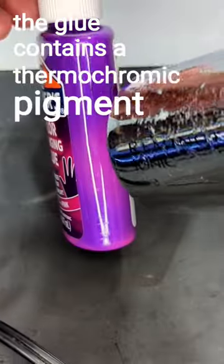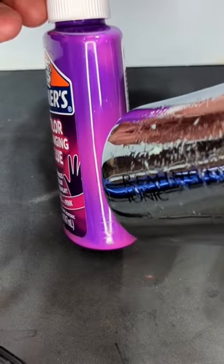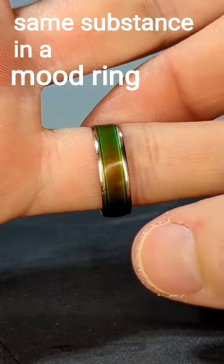The glue contains a thermochromic pigment. It's a molecule that changes color at a certain temperature. It's the same sort of substance that's used in a mood ring.